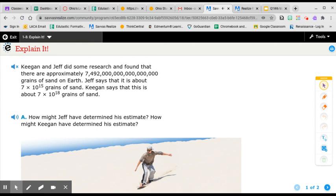Keegan and Jeff did some research and found that there are approximately 7,492,000,000,000,000 grains of sand on Earth. Jeff says that it is about 7 times 10 to the 15th power grains of sand. Keegan says that this is about 7 times 10 to the 18th power grains of sand.